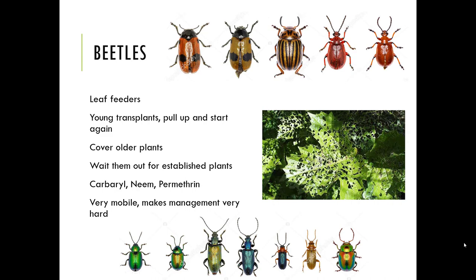Beetles are a type of leaf-feeding insect that can just do a number on certain plants — making tons of tiny little holes. In the hot times of summer they tend to come out when it's cool like in the evening, so you don't notice the damage until morning. If it's a potted plant or one that doesn't need a pollinator, cover it with row covers. Move plants away from the area where beetles tend to be thriving. Wait them out — for established plants sometimes you can wait out the beetles and the plant will be fine. Young transplants you might have to pull them up and start over if these guys take them down to nubbins.